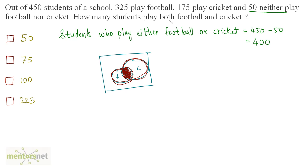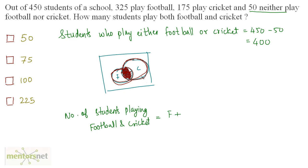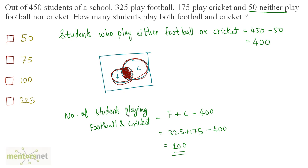So the students who play both football and cricket equals the total number of students playing football plus the total number playing cricket minus all the students who play either football or cricket. So this is equal to 325 plus 175 minus 400, which equals 100. So 100 students play both football and cricket. Option C is the right answer.